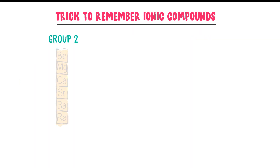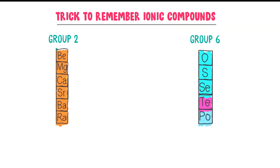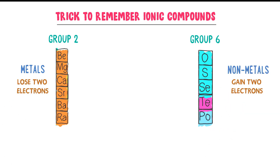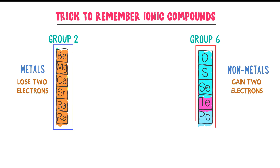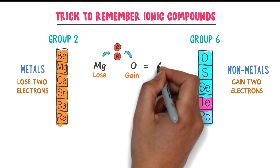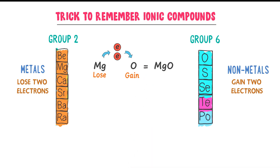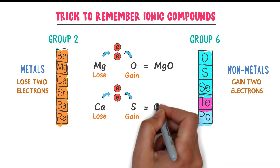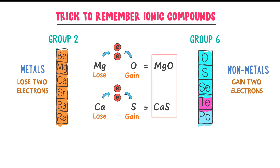Now let me teach you the second type of ionic compounds. Consider group 2 elements and group 6 elements. Group 2 elements are metals and group 6 elements are non-metals. For example, magnesium from metals and oxygen from non-metals — magnesium loses 2 electrons and oxygen gains 2 electrons to form magnesium oxide. Similarly, calcium from metals and sulfur from non-metals — calcium loses 2 electrons and sulfur gains 2 electrons to form calcium sulfide. Thus magnesium oxide, calcium sulfide, etc. are all ionic compounds.